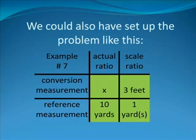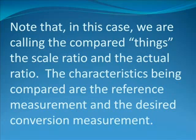Alternately, we could also set up the problem like this. You always have your choice as to whether to use rows or columns for the characteristics compared. Although, in my experience, it seems to work better if the items name the columns and the characteristics name the rows. But either way will work fine. Note that, in this case, we are calling the compared things the scale ratio and the actual ratio. The characteristics being compared are the reference measurement and the desired conversion measurement.